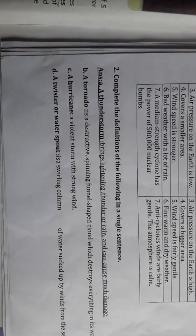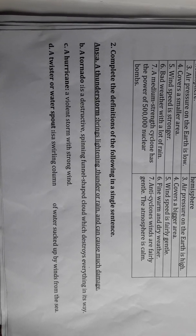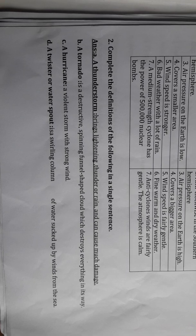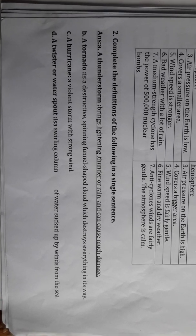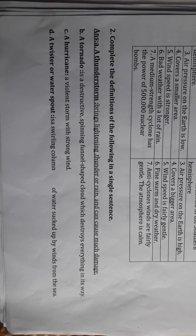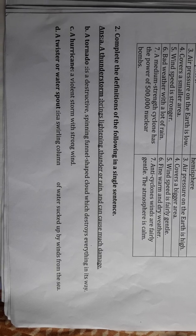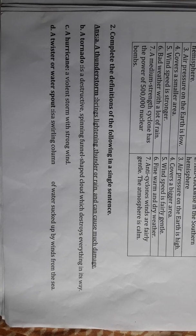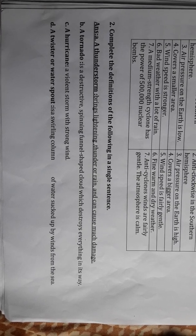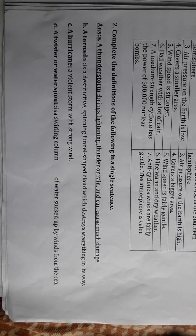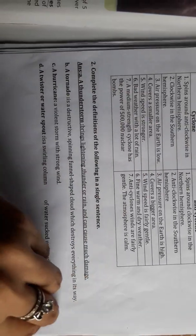Key definitions: Thunderstorms bring lightning, thunder, and rain and cause much damage. A tornado is a destructive spinning funnel-shaped cloud which destroys everything in its way. A hurricane is a violent storm with strong winds. A twister or waterspout is a swirling column of water sucked up by wind from the sea.